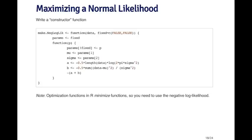The objective function is going to depend on some data, which is the first argument to this make.negloglike function. The second argument is a logical vector called fixed, which determines whether or not I want to fix some of the parameters. Inside the constructor function, I define another function which takes an argument called p for the parameters — this is the parameter vector I want to optimize over. This function returns the log likelihood for a normal distribution, which has two parameters: a mean mu and a standard deviation sigma.